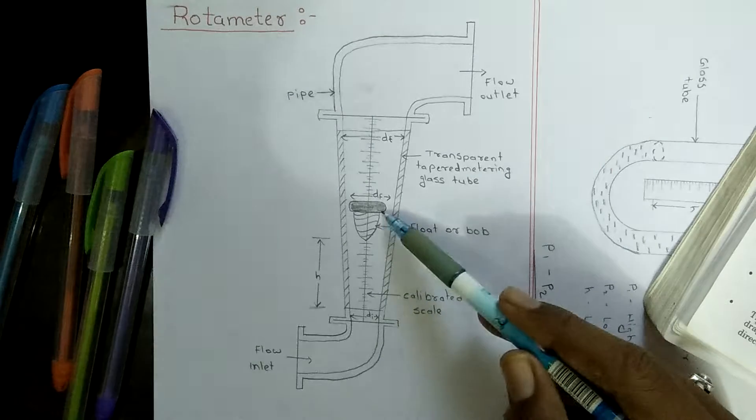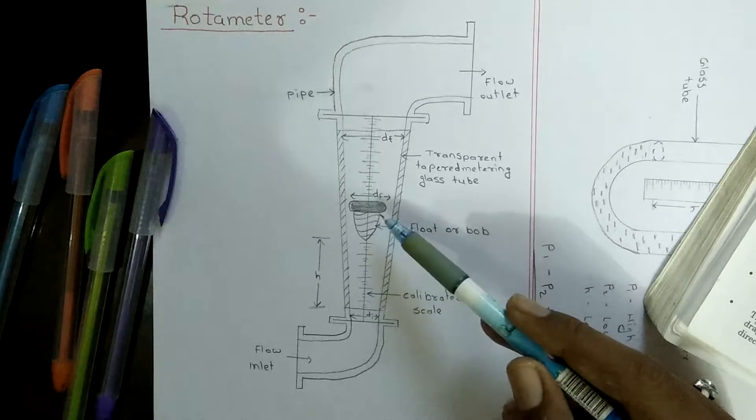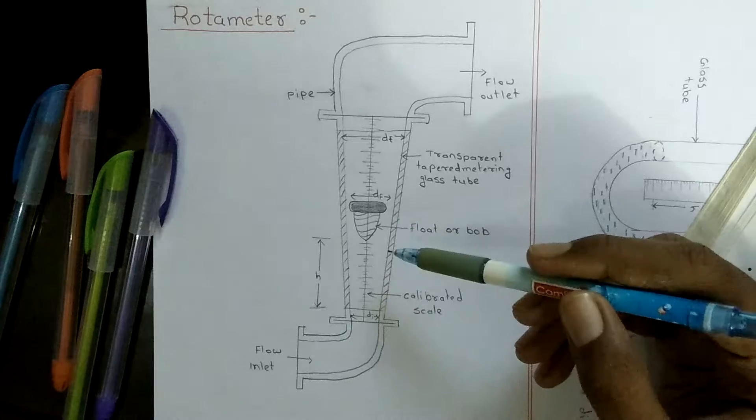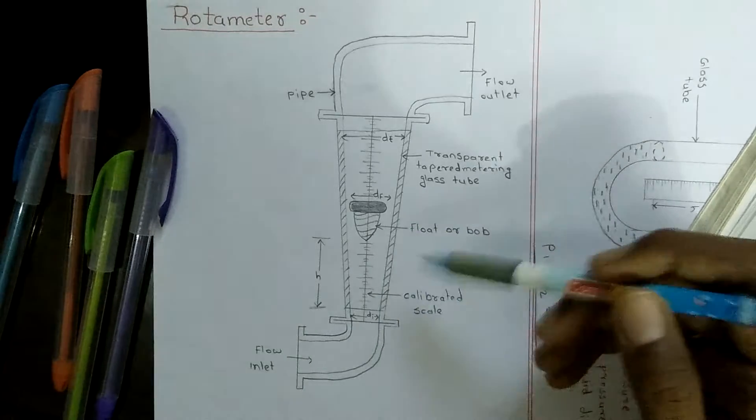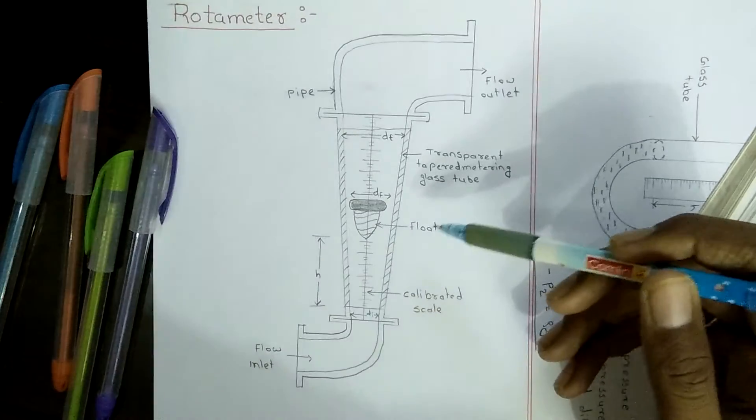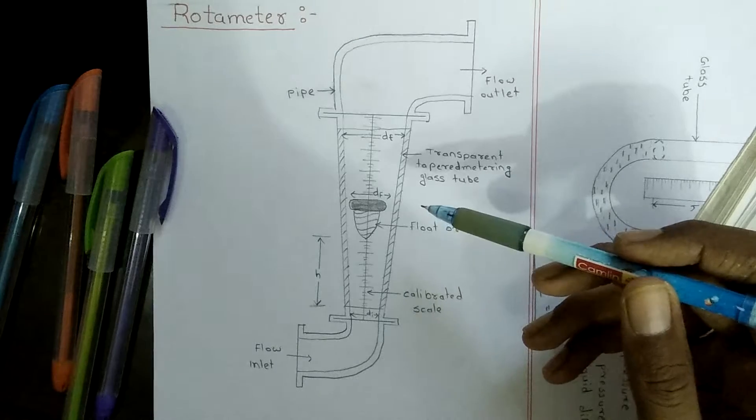When the float achieves some level in the tube, it is a direct indication of the flow rate. So it is a simple method to determine level measurement in a rotameter.